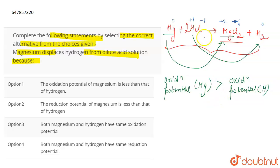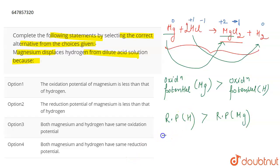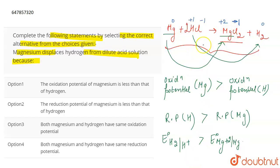Magnesium has a better tendency to oxidize itself, whereas hydrogen is getting reduced — meaning hydrogen has a tendency to reduce itself in this reaction. This means the reduction potential for hydrogen is greater than the reduction potential for magnesium, represented as E°(H⁺/H₂) > E°(Mg²⁺/Mg).